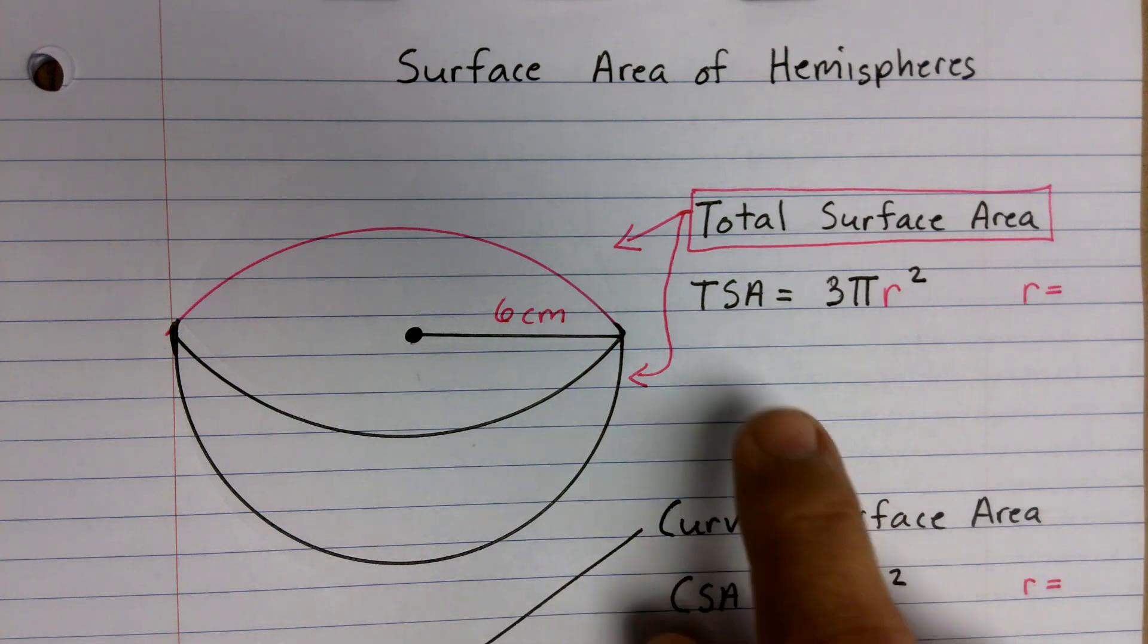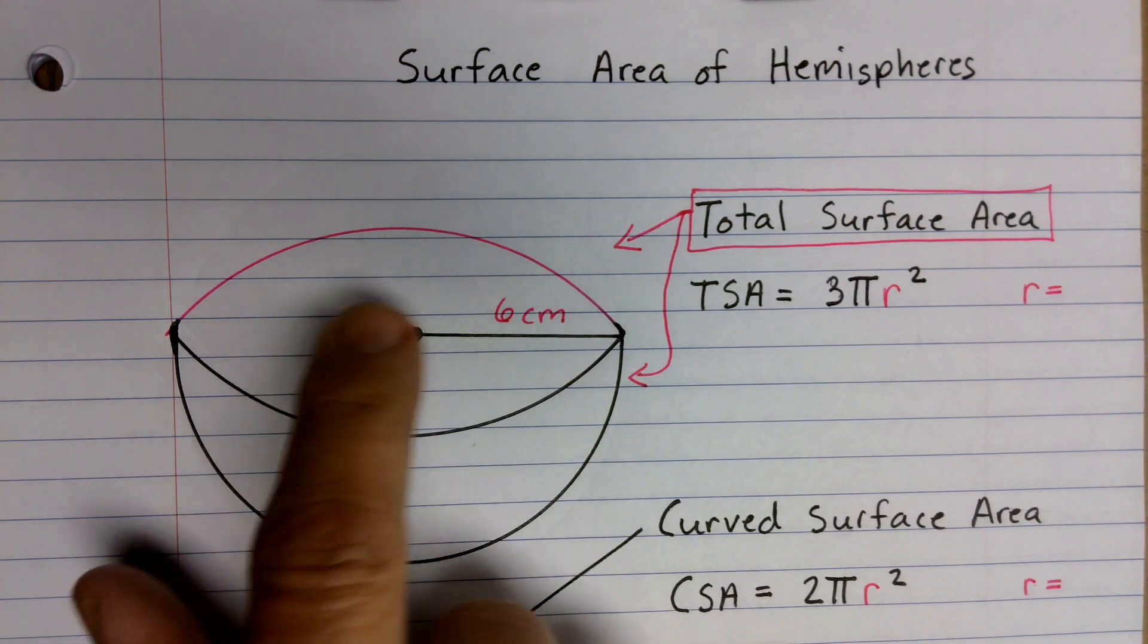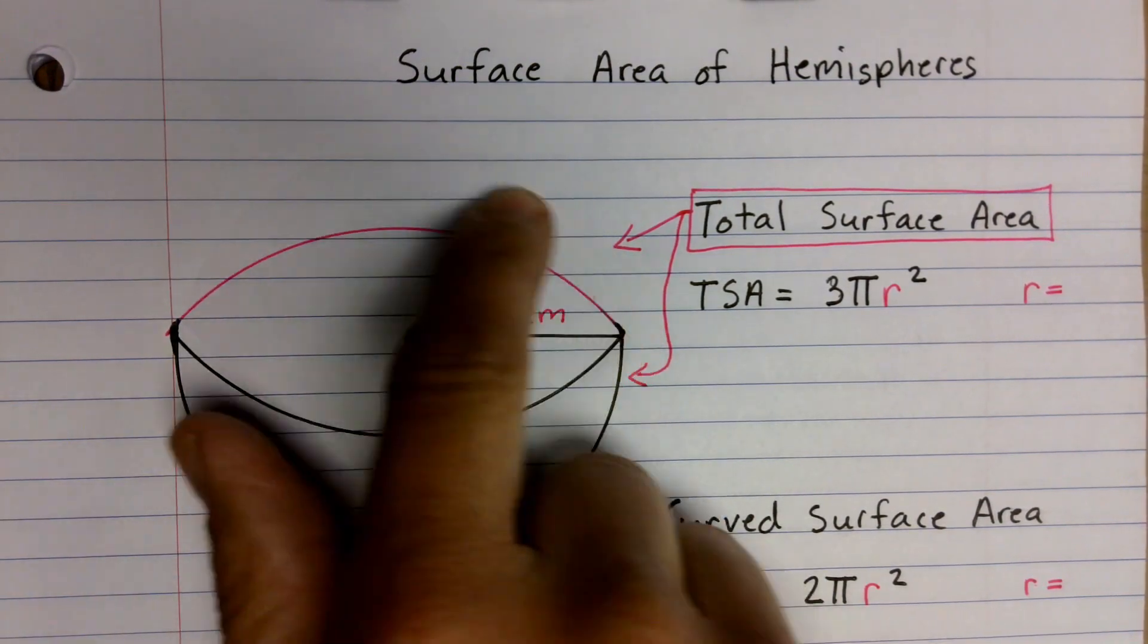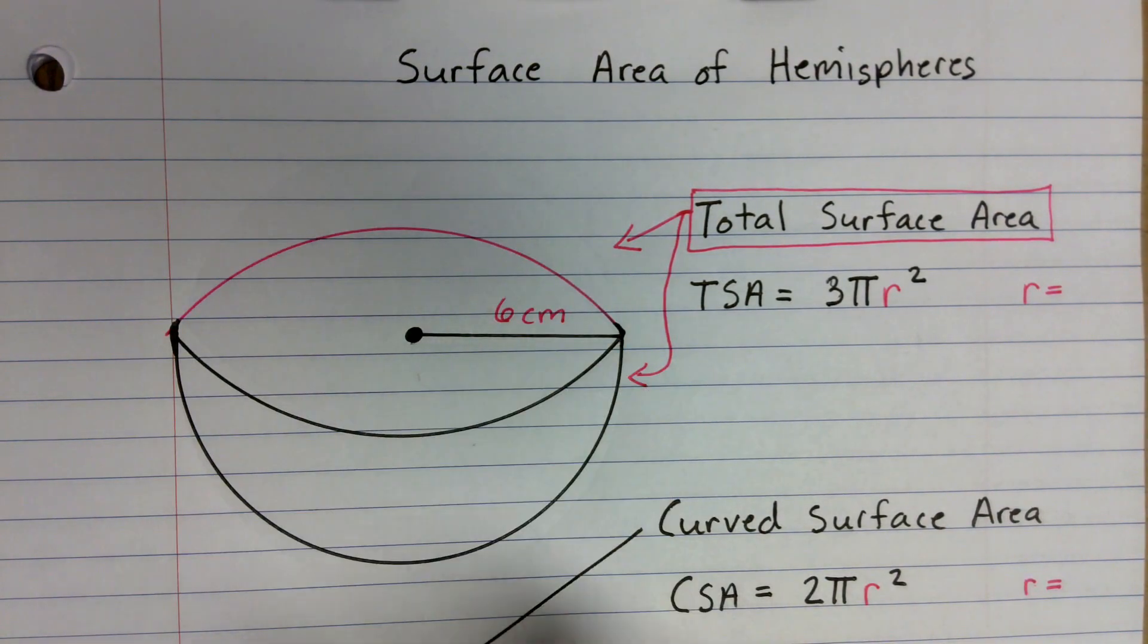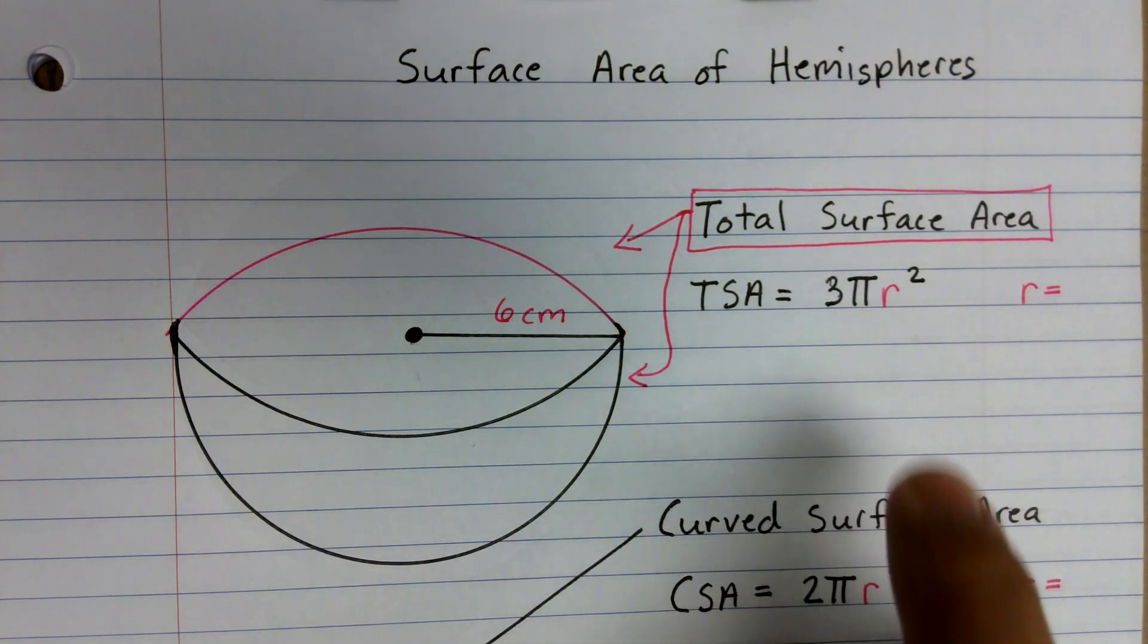First of all, you could find the total surface area, which includes this curved surface area and the top circular portion. If we were looking at it, it'd look like an orange cut in half. And that would be the total surface area, and that formula is going to be 3πr².